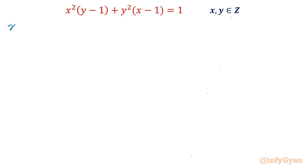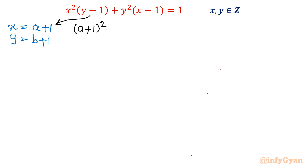I will begin this problem by substitution. I will put x = a + 1 and y = b + 1. So let's substitute. I will write (a + 1)² — the clue is from y − 1, so with substitution b + 1, y − 1 becomes b. Plus y² which is (b + 1)², and x − 1 becomes a, equal to 1.